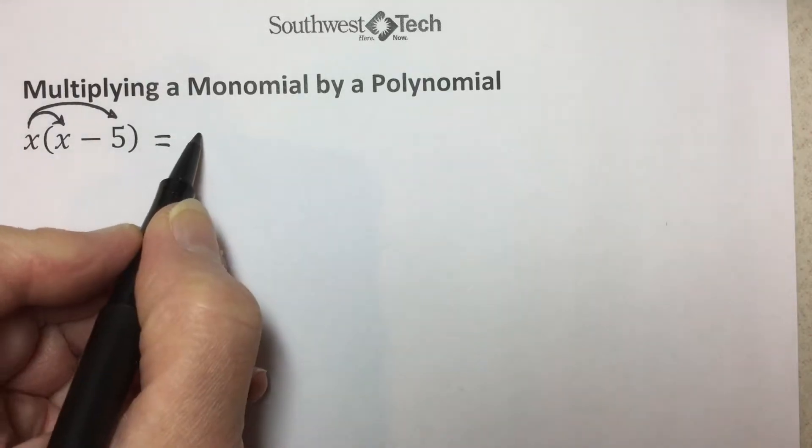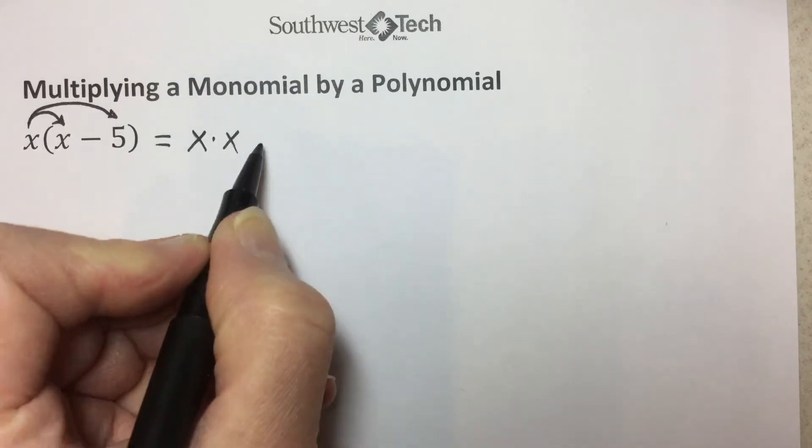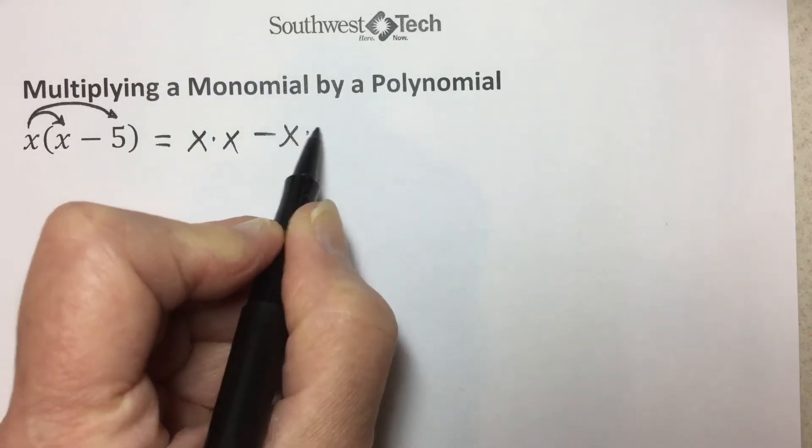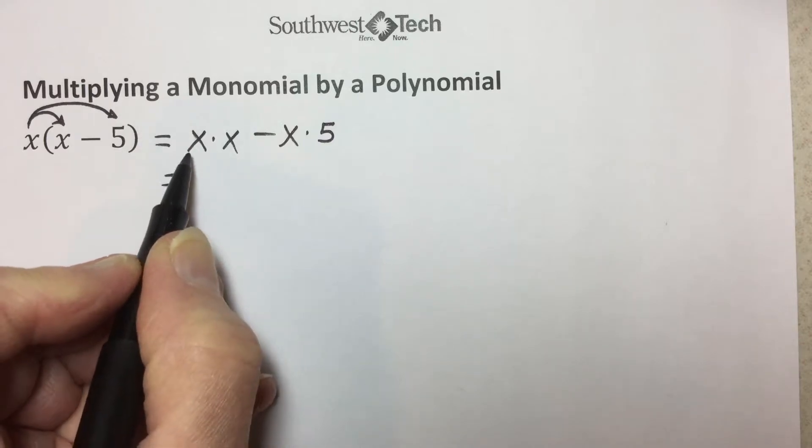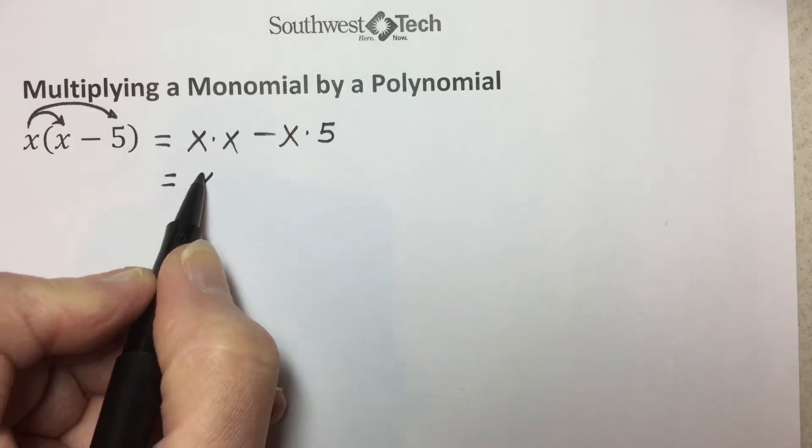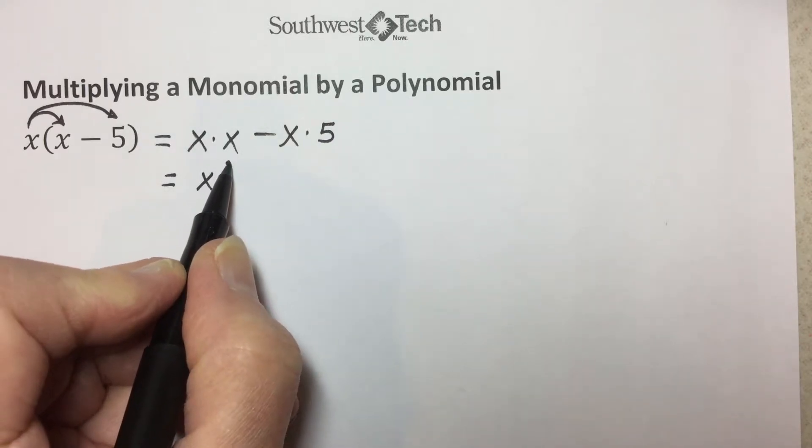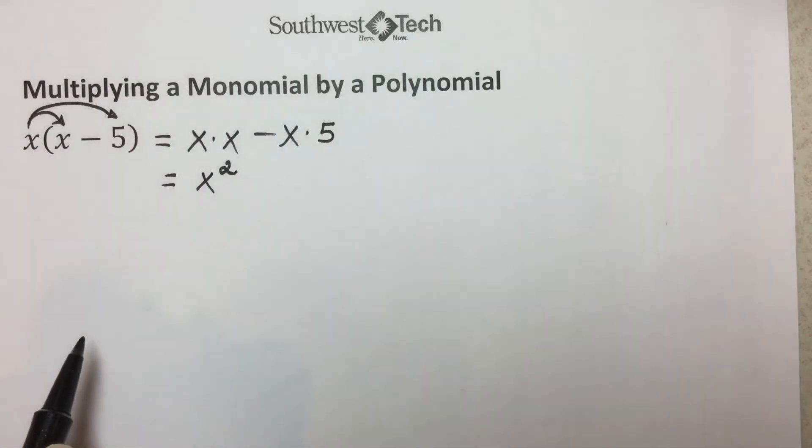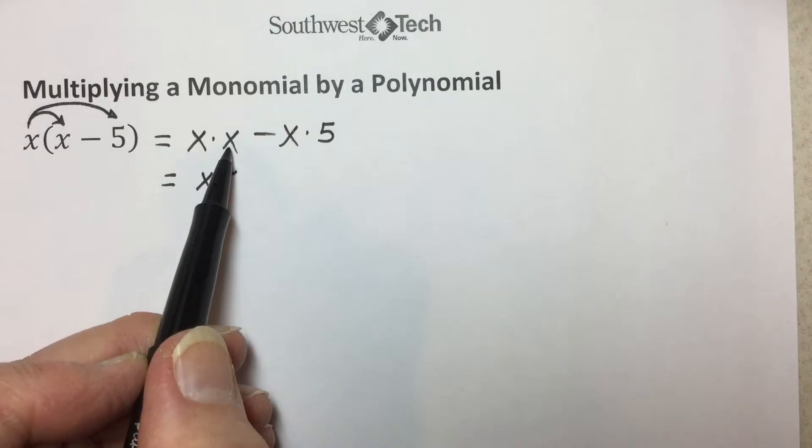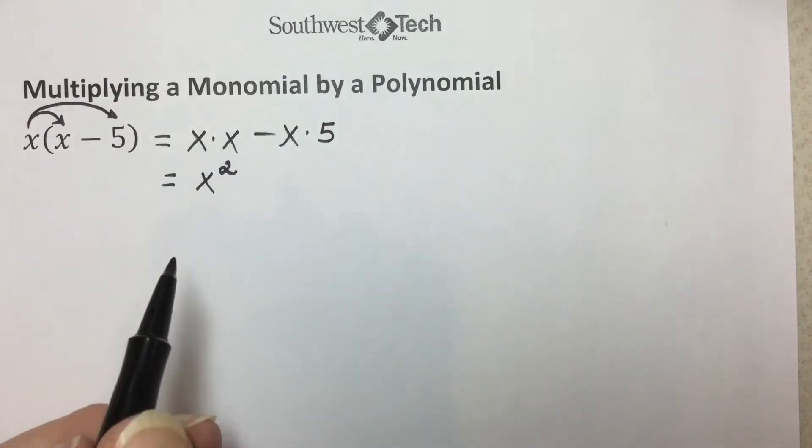Simplifying, we have x times the first term minus x times the second term. Simplifying, x times x in exponential form, common basis of x with the power of 2 since there are two factors, the same being multiplied together.